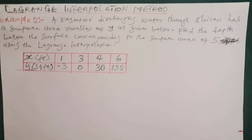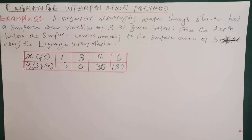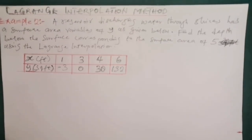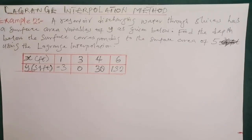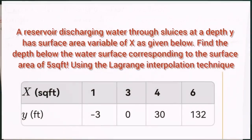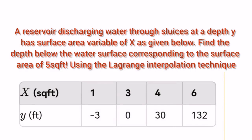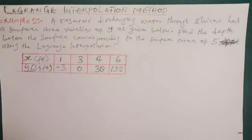Hello and welcome to this video on interpolation. This is a second solution video using the Lagrange interpolation method. The question says: a reservoir discharging water through sluices has a surface area variable x as given below. Find the depth below the surface corresponding to a surface area of 5 using the Lagrange interpolation.